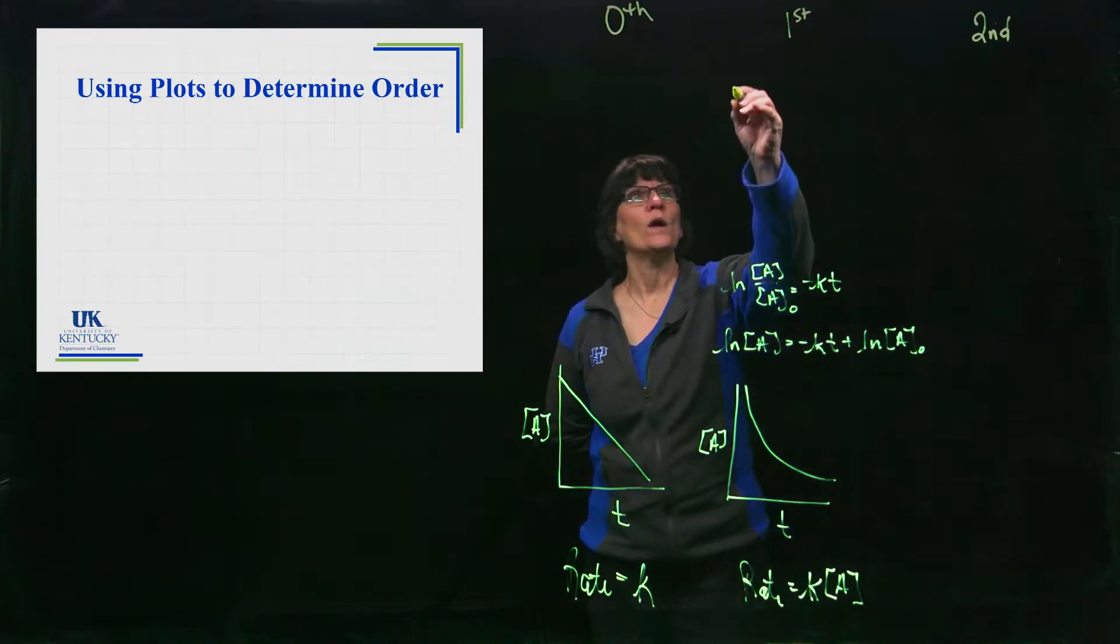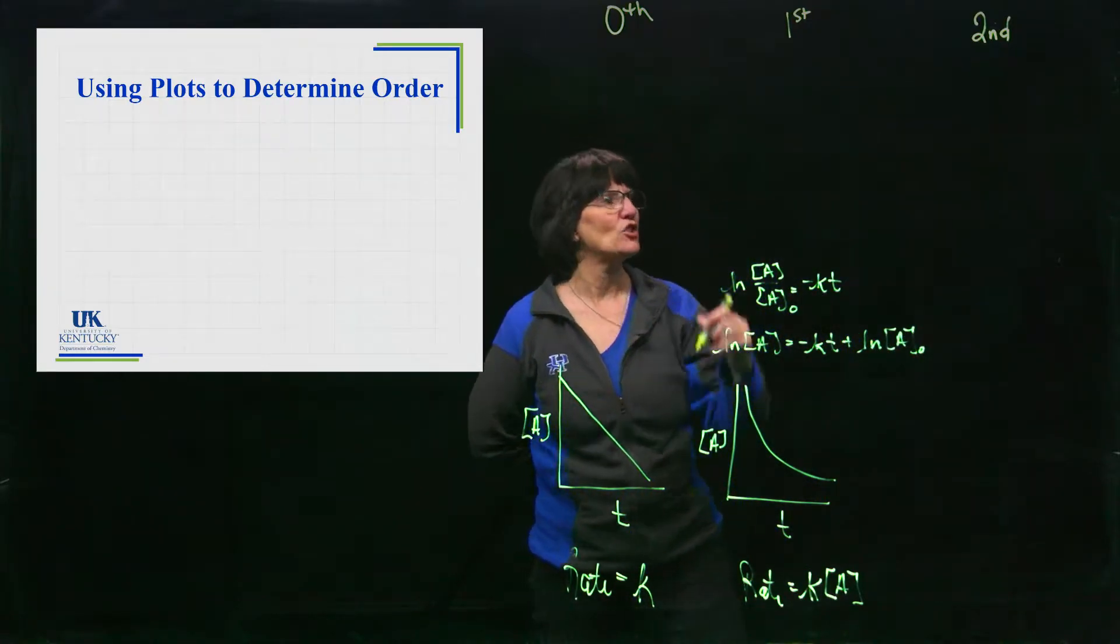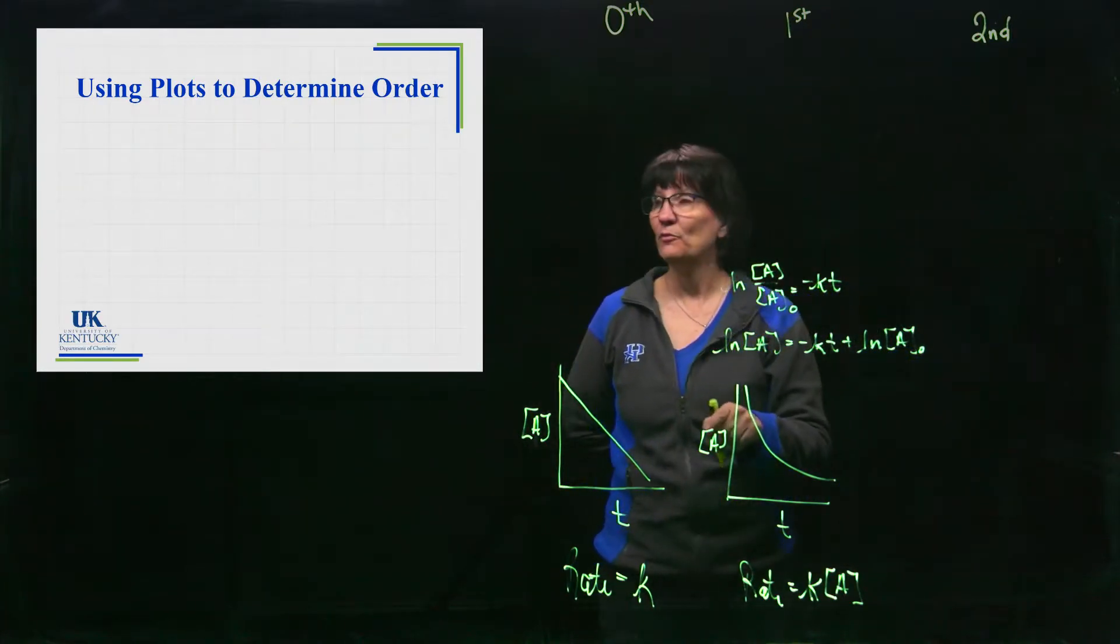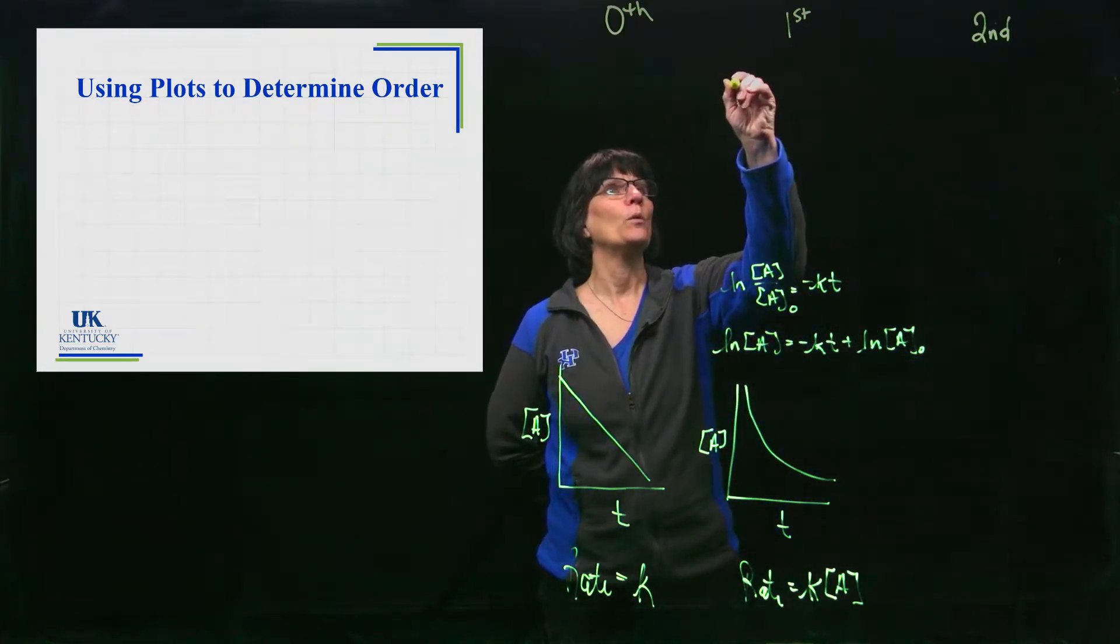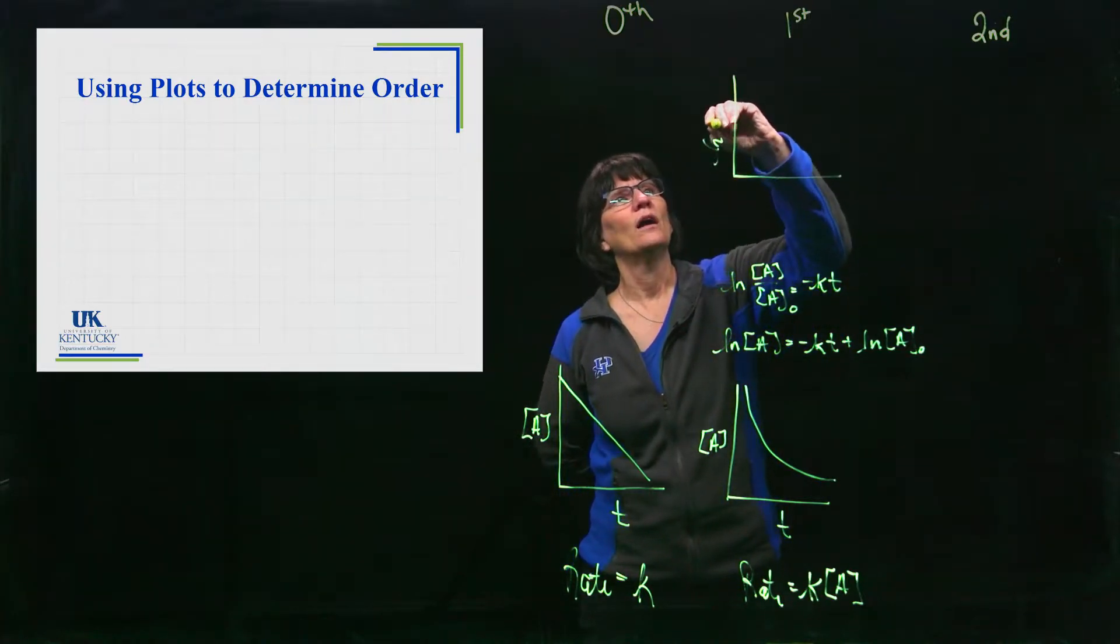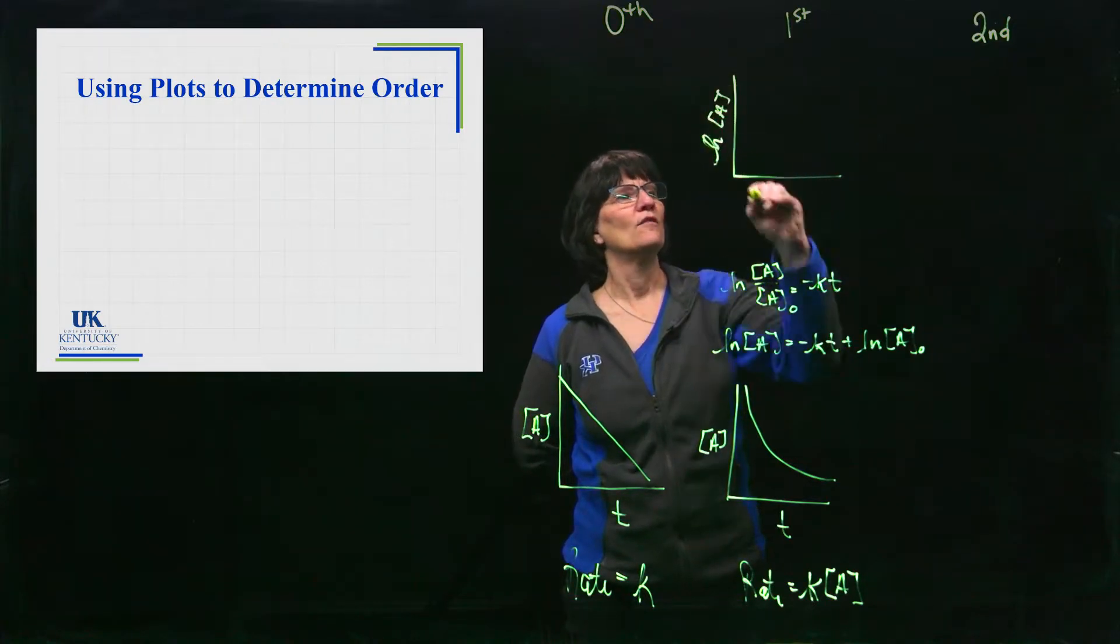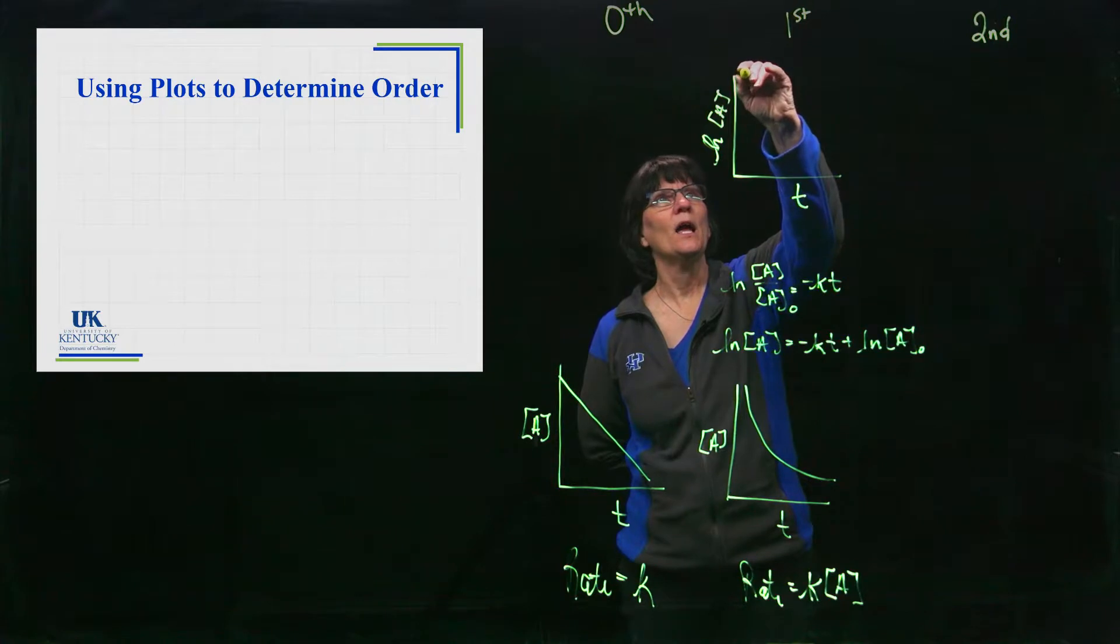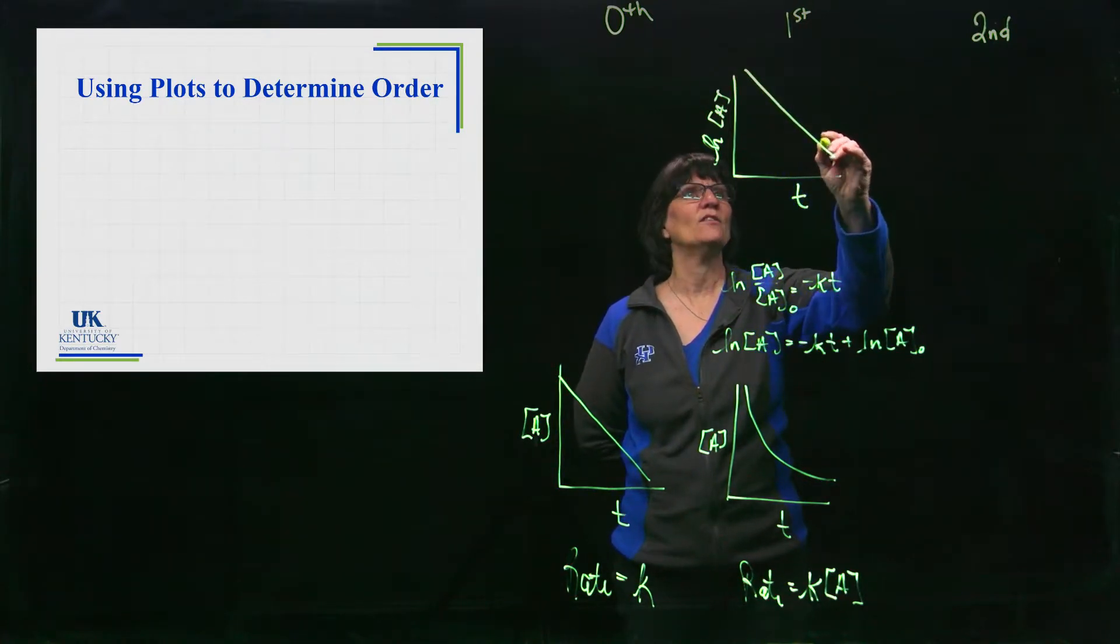We see that in order to get a nice straight line between information about [A] and t, what we really have to plot is the natural log of the concentration of [A] versus time. Now this is going to give me a straight line, but the straight line is going to have a negative slope. The slope is equal to negative k.